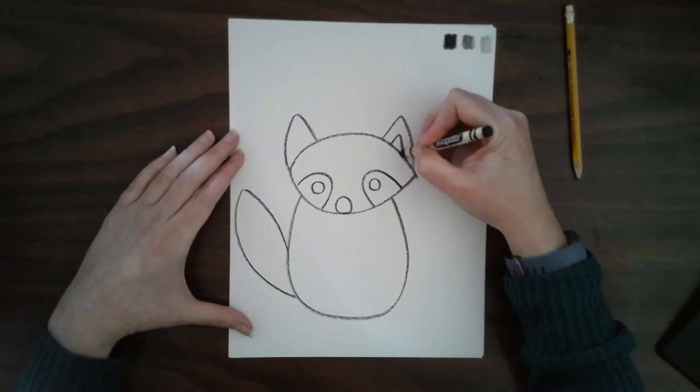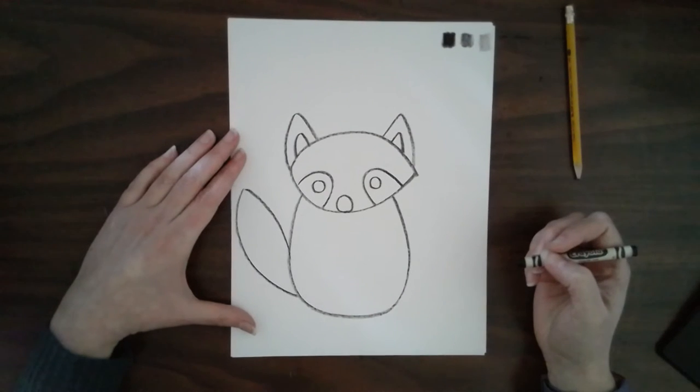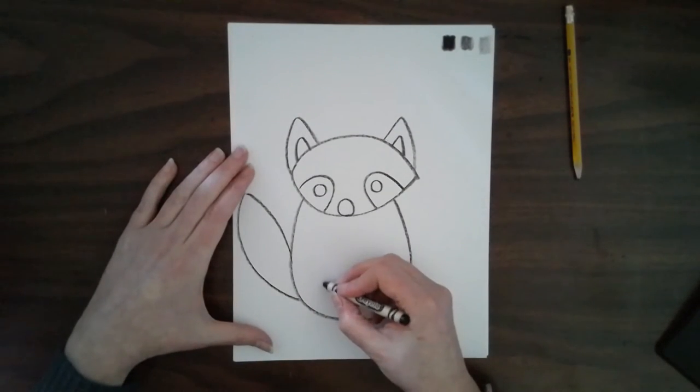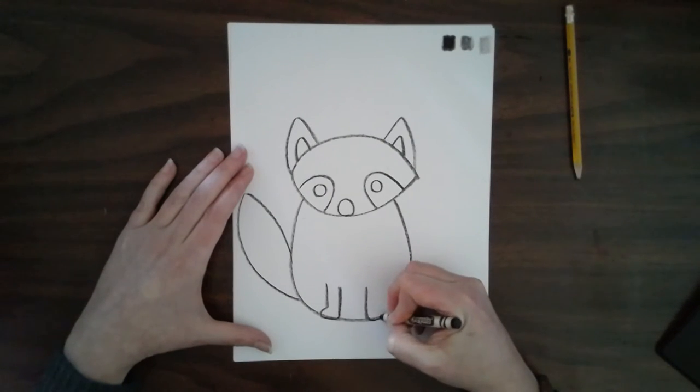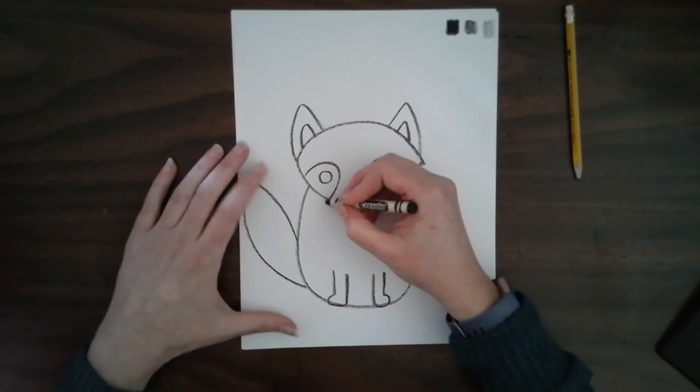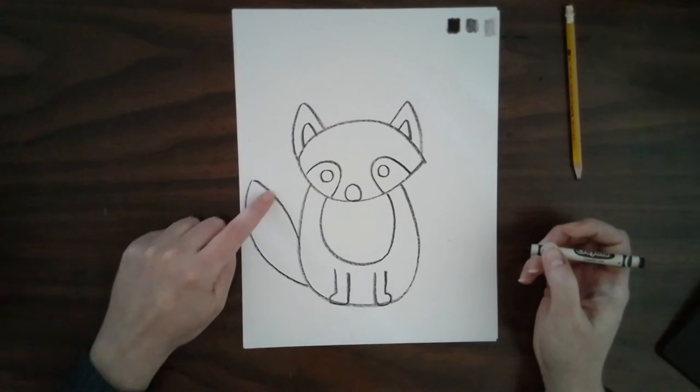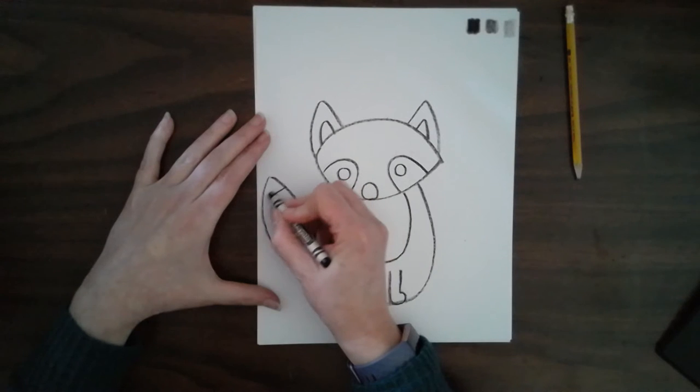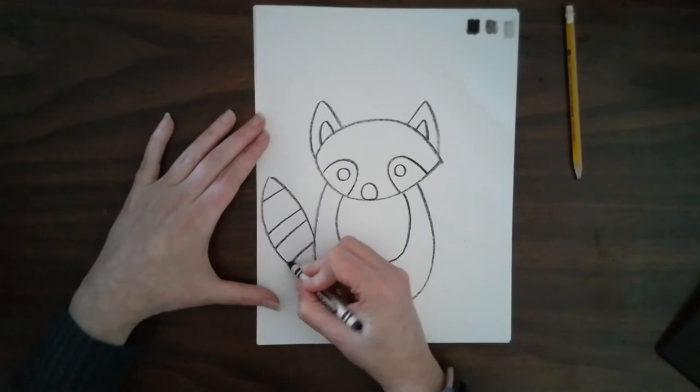I'm going to put another little triangle in the ears. And then let's add some little raccoon feet. Like that. And then I'm going to make another U shape for the belly. And raccoons have some stripes on their tails, so I'm going to draw some straight lines that go across for the stripes.